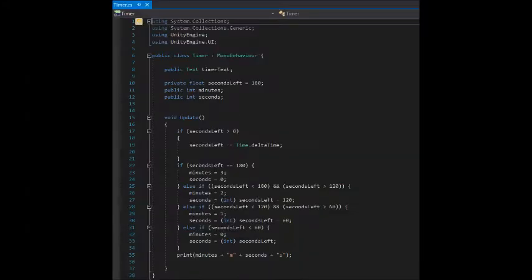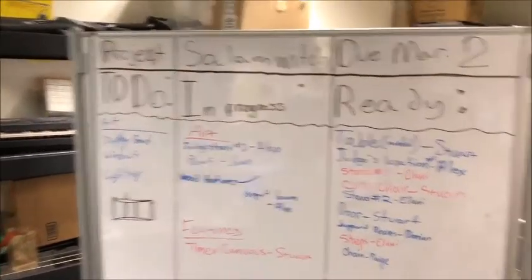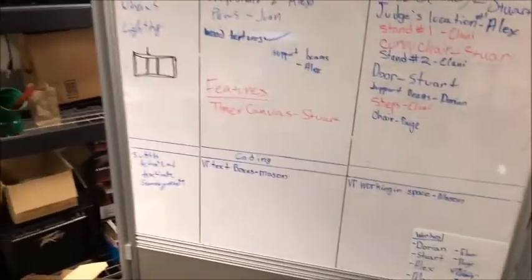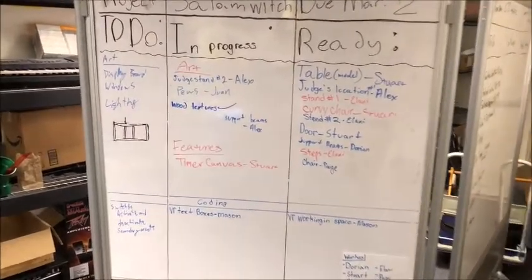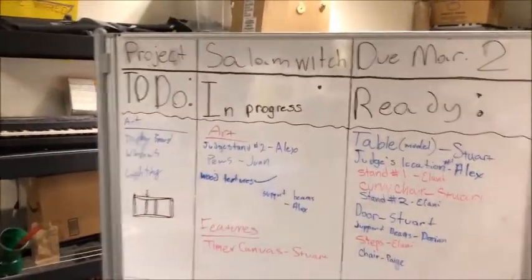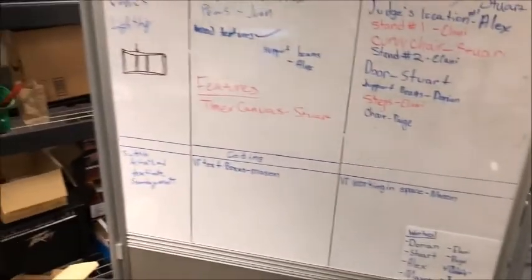The Salem Witch Trials VR project began to evolve into a more formal operation. Eventually, we had designated a whiteboard where people would put up tasks that needed to be done. From this, other students could take on tasks that well suited their skill level and post it onto our group's file sharing webpage. Over time, the tasks we needed to get done slowly moved from the to-do column, to the in-progress column, and finally to the finished column.